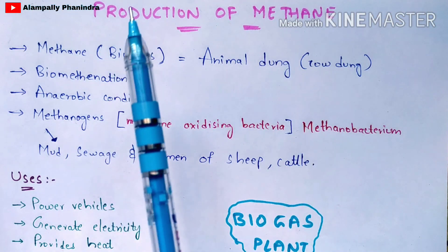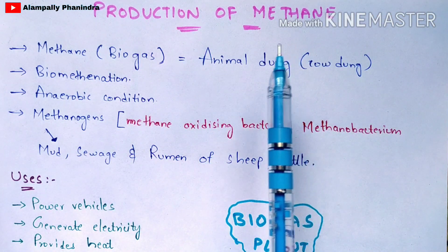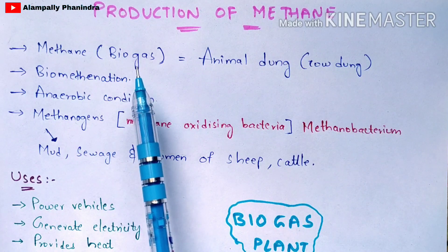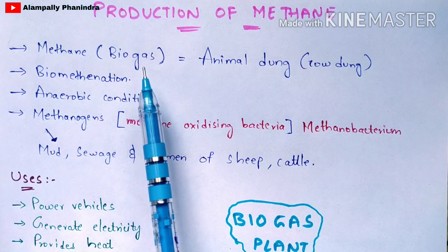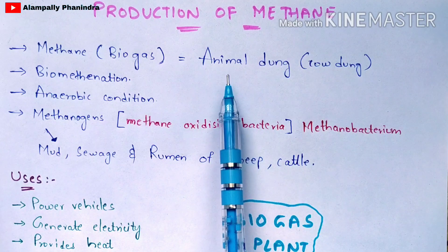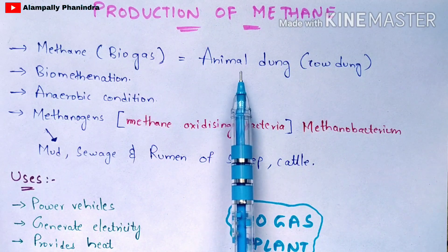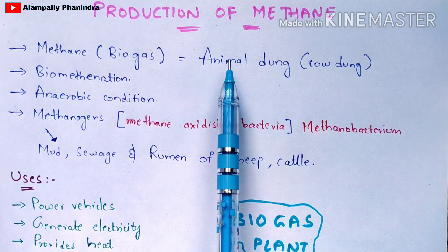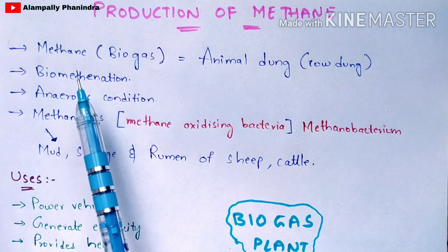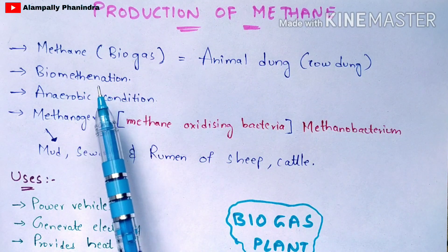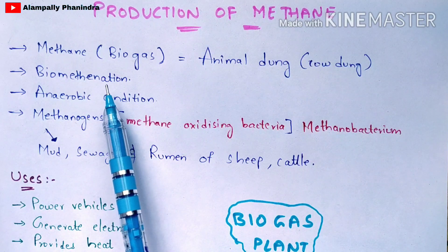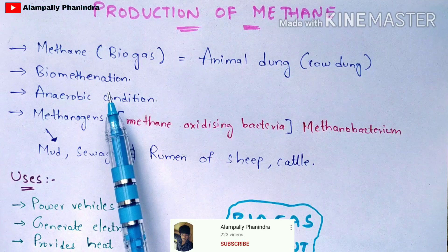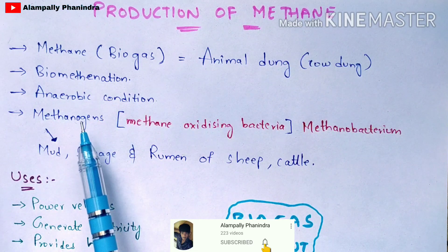In this video, let us discuss the production of methane. Methane is also called biogas. It is mainly produced by the fermentation process using animal dung — most commonly cow dung and buffalo dung. The process of production of methane is called biomethination, and it is done under anaerobic conditions where oxygen is not utilized.